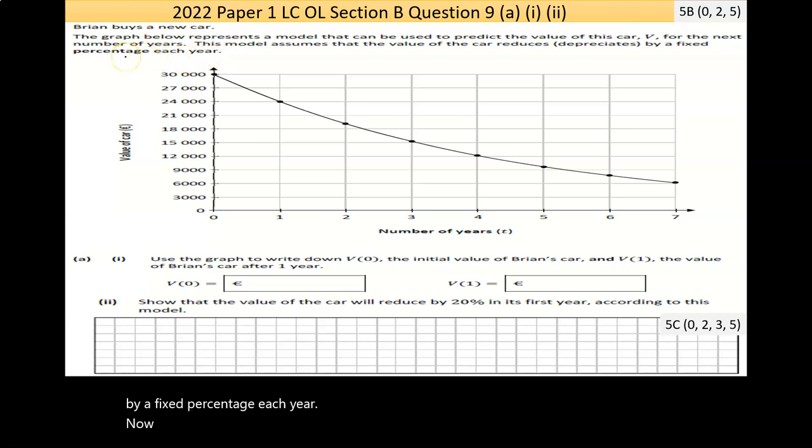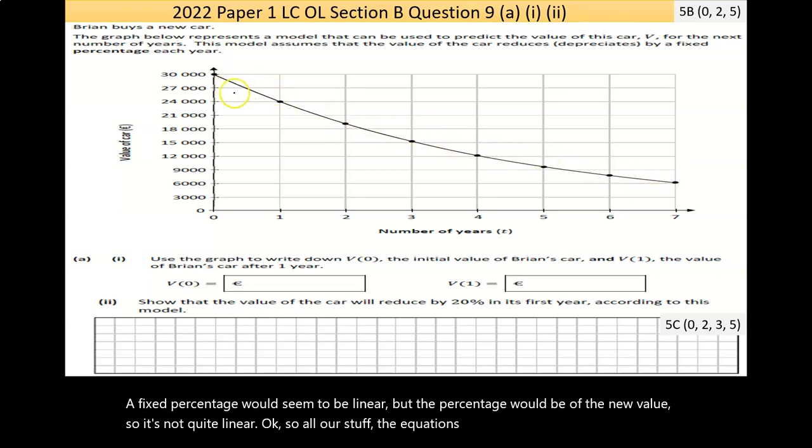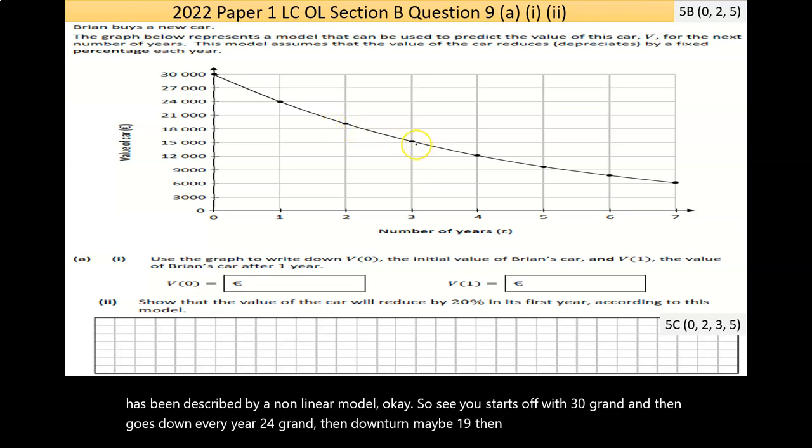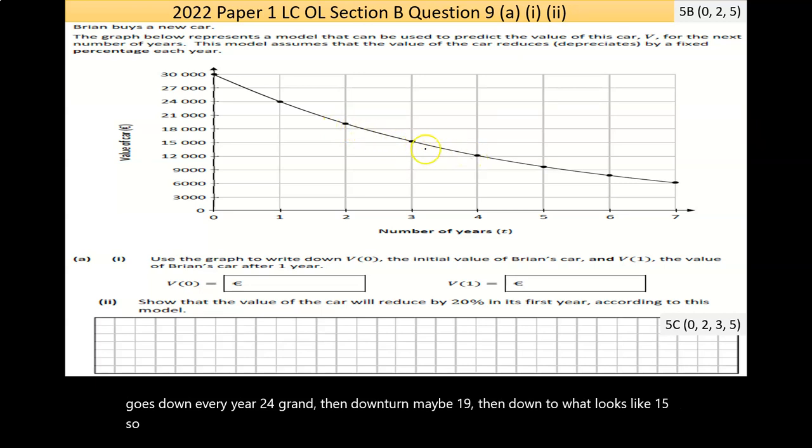Now, a fixed percentage would seem to be linear, but the percentage would be of the new value, so it's not quite linear. The equation of the line isn't really helpful here. This has been described by a non-linear model. It starts off at 30 grand and then goes down every year to 24 grand, then down to maybe 19, then down to what looks like 15. I'm guesstimating based on the graph.